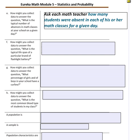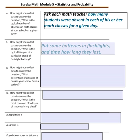Question E: How might you collect data to answer the question, 'What is the typical number of absences in math classes at your school on a given day?' You would ask each math teacher how many students were absent in each of their math classes for a given day. Question F: For the typical lifespan of a particular brand of flashlight battery, you would put some batteries in flashlights and time how long they last.